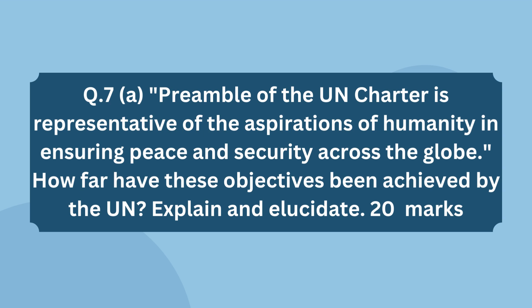Question number 7 part A states: 'The Preamble of the UN Charter is representative of the aspirations of humanity in ensuring peace and security across the globe. How far have these objectives been achieved by the UN?' In this answer, decipher the Preamble and discuss to what extent its objectives — established after World War II — have been achieved, along with the challenges faced and any failures.